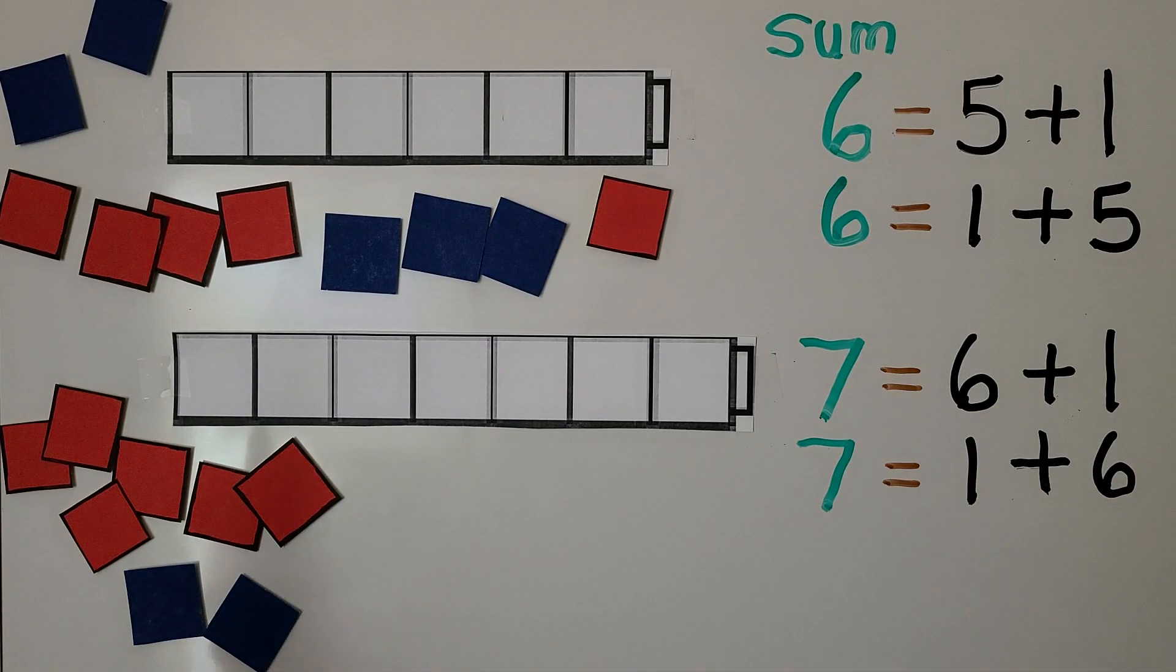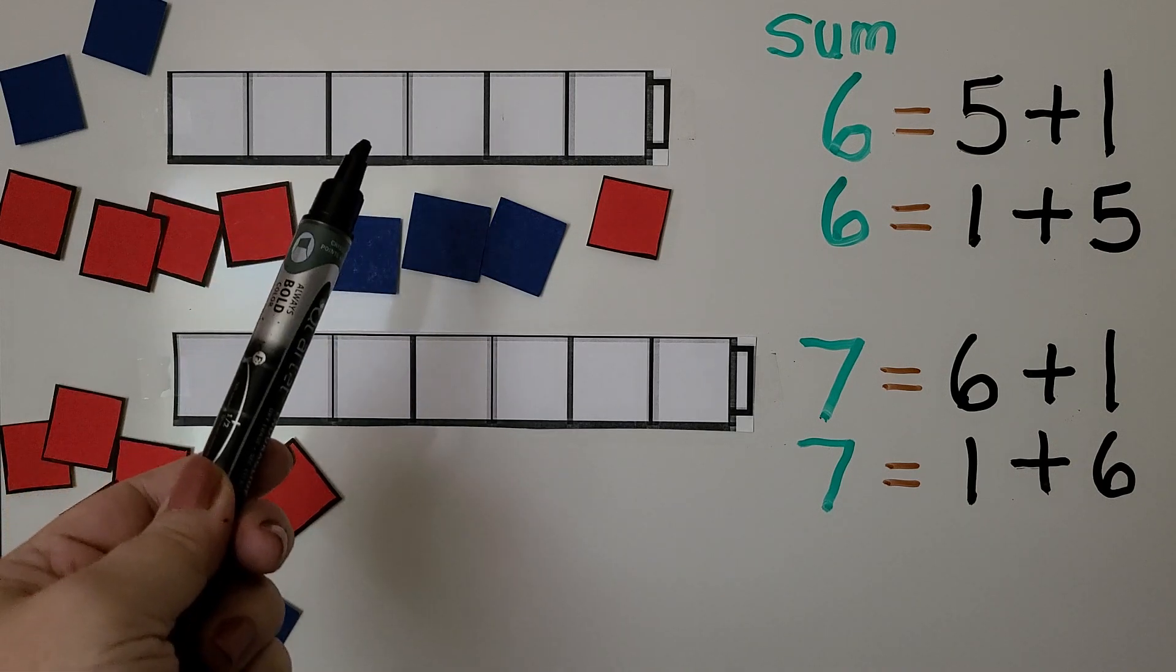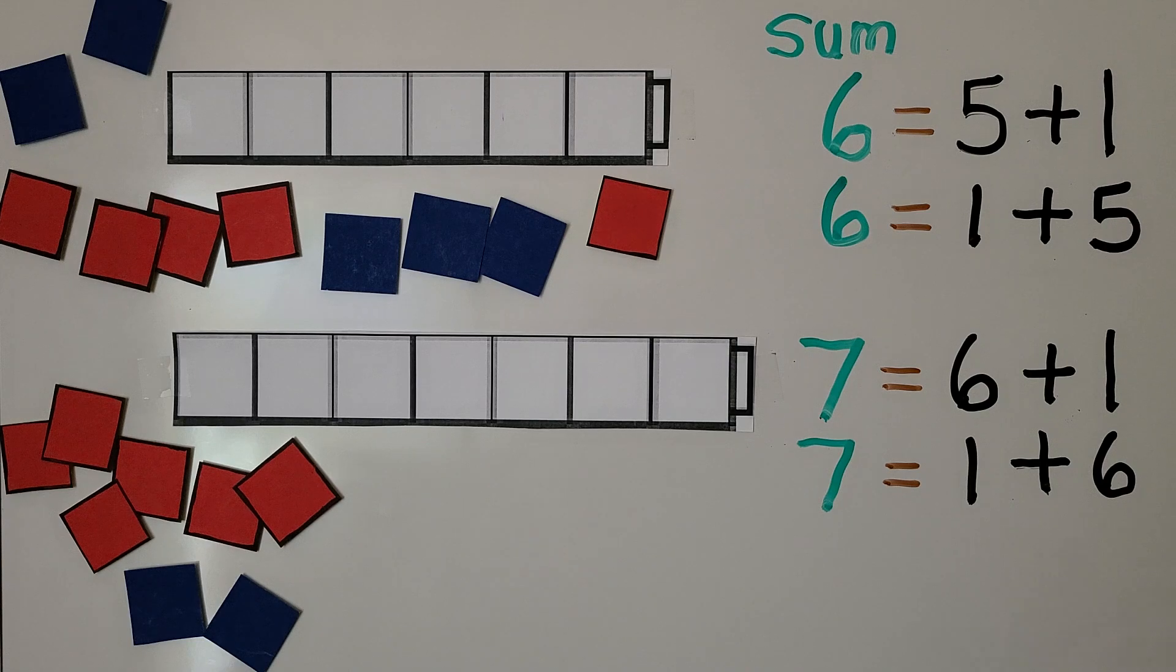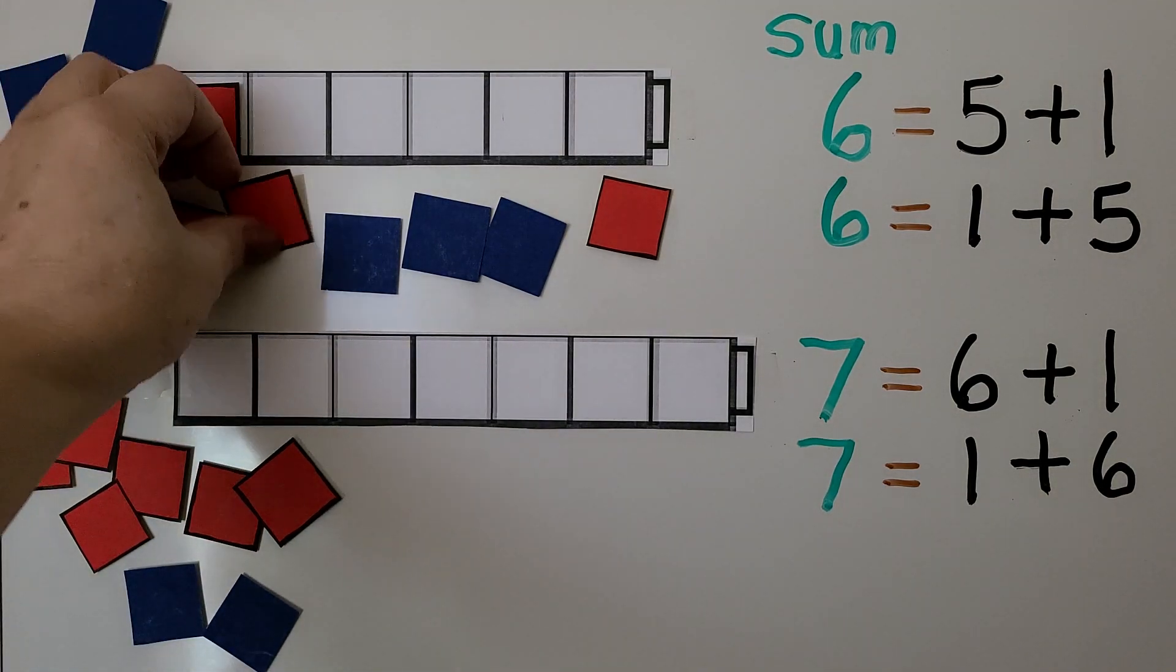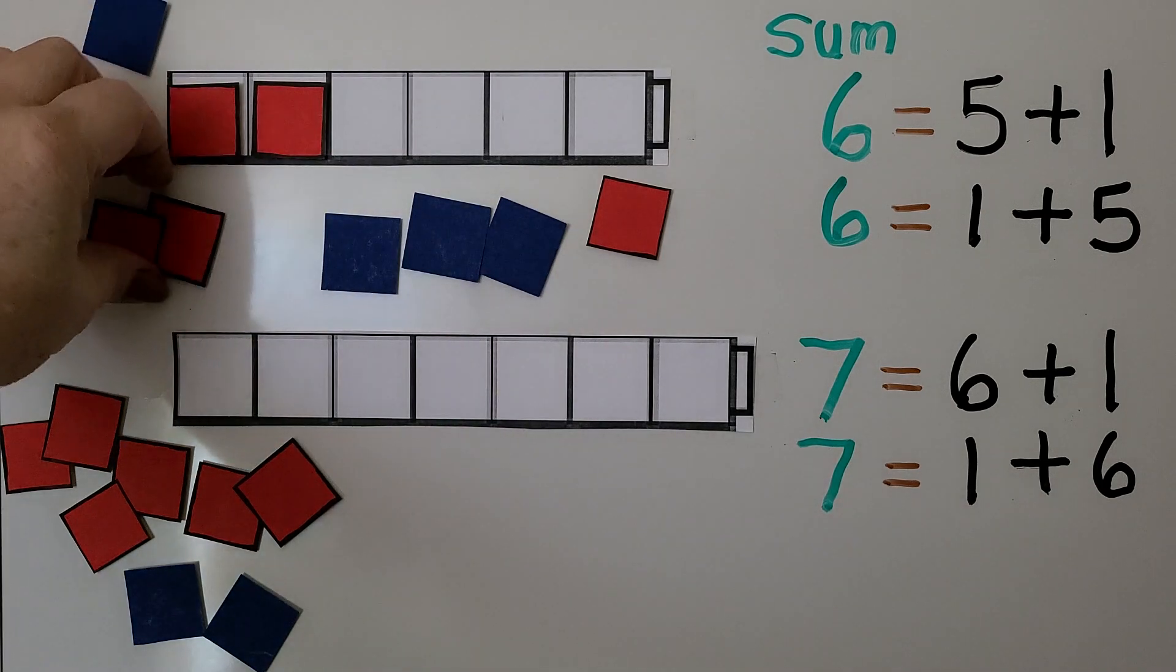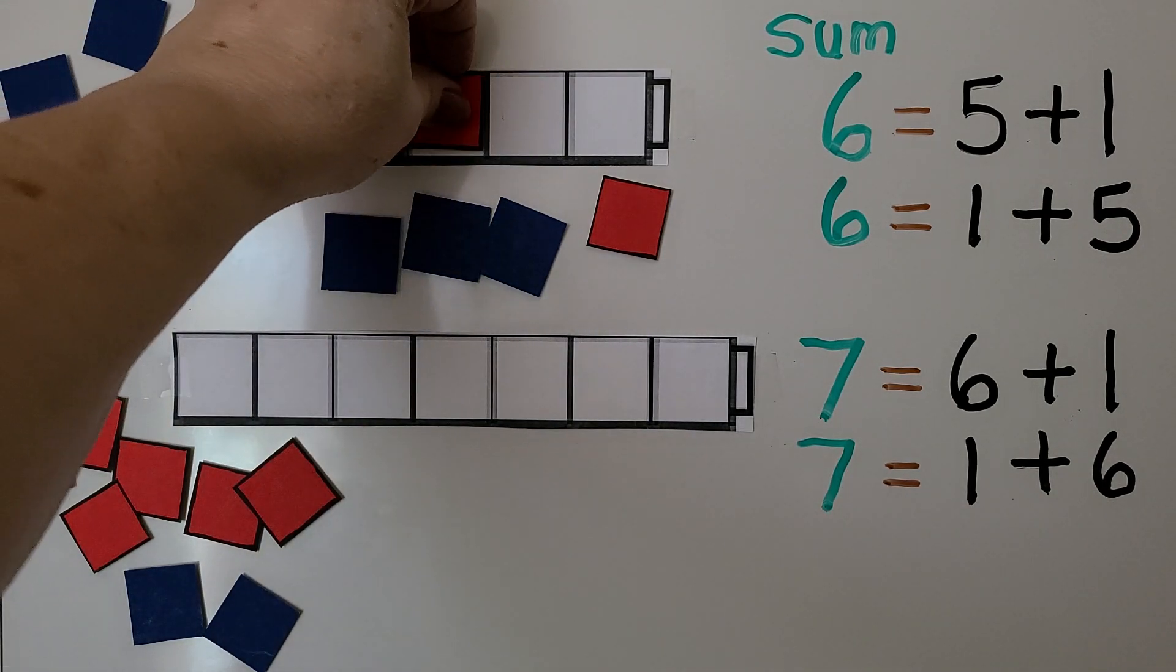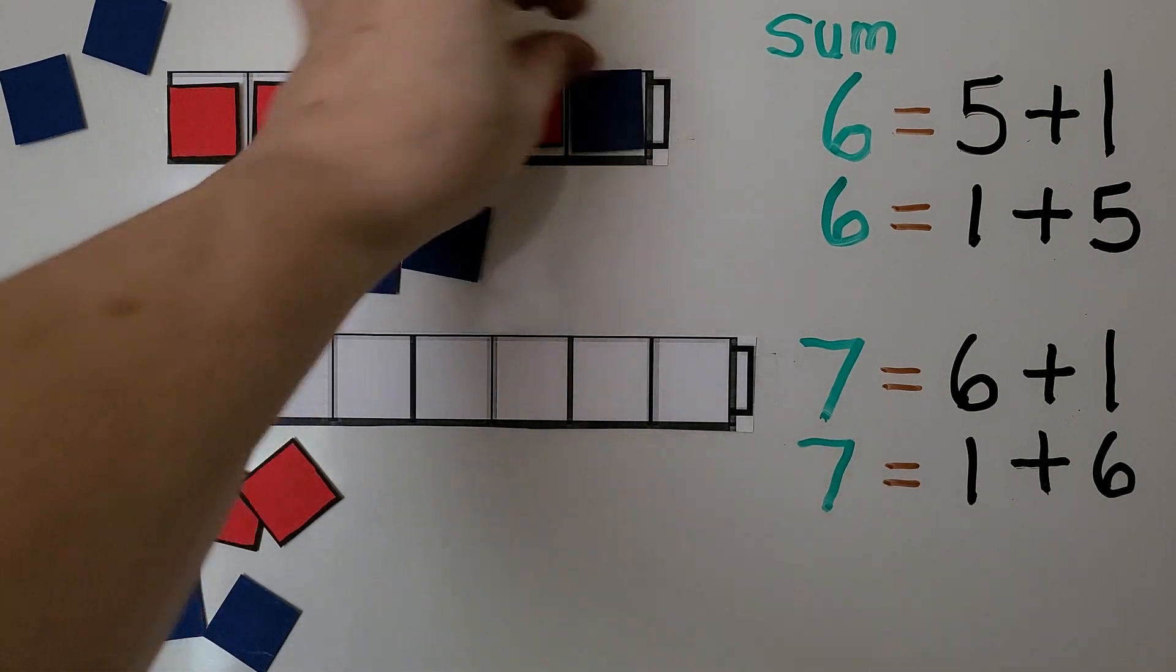Here we have an empty cube train with 6 cubes: 1, 2, 3, 4, 5, 6. We can show 6 as 5 red ones—1, 2, 3, 4, 5—and 1 blue one.